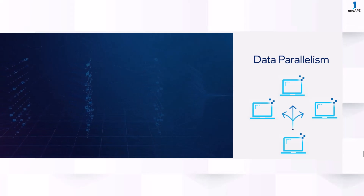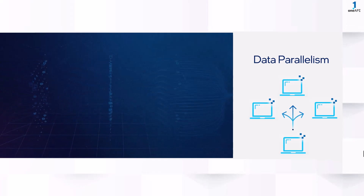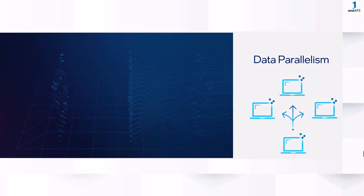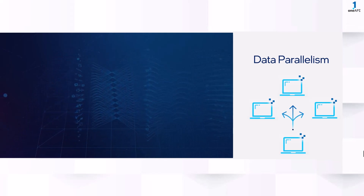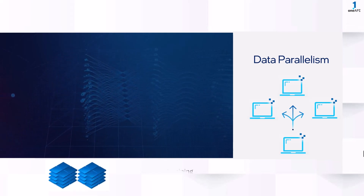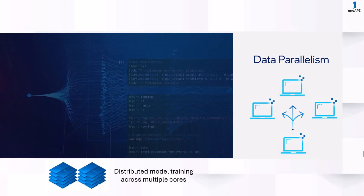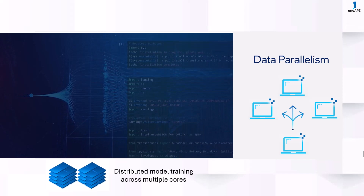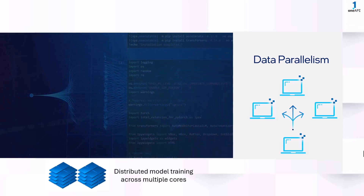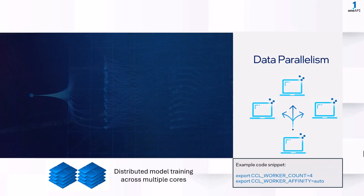With OneCCL, you can achieve data parallelism by running the same deep learning model on multiple machines, each with a subset of data. This enables faster distributed training of compute-intensive models across multi-core architectures.